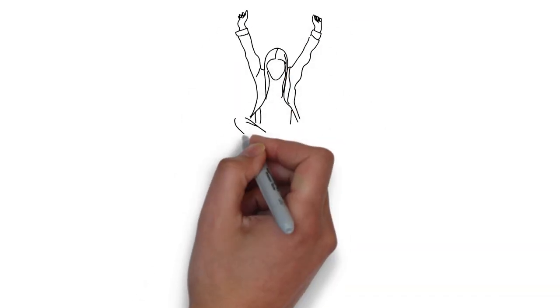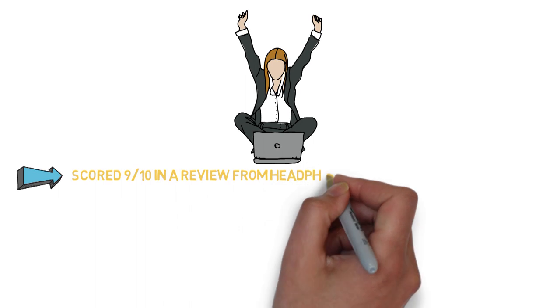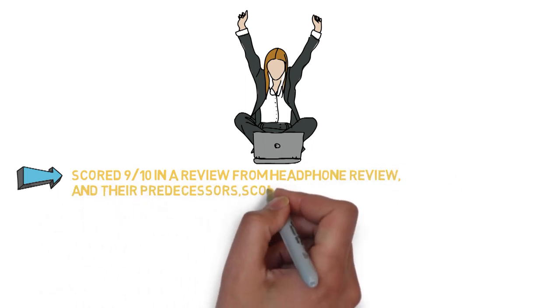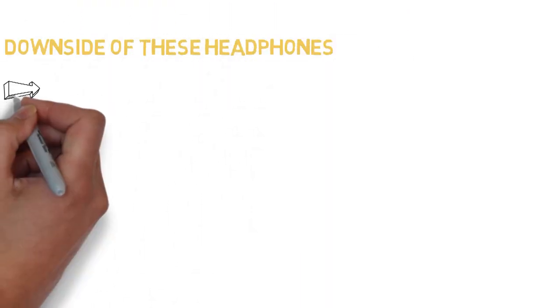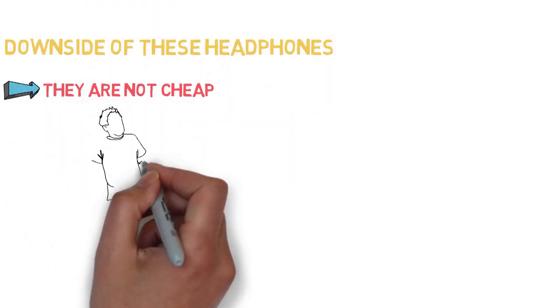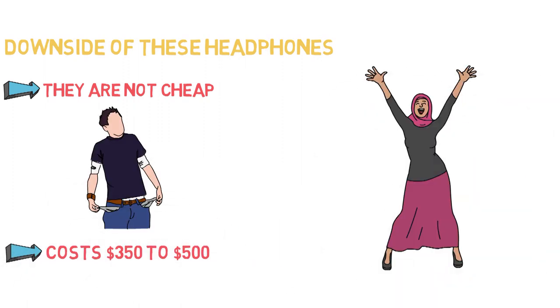We are not the only ones who love the Sennheiser Momentum 2.0 wireless headphones. They scored 9 out of 10 in a review from Headphone Review, and their predecessor scored 9 out of 10 on Trusted Review, and 4 out of 5 on CNET. The main downside to these headphones is that they're not cheap. To get them, you'll need to shell out a cool $350 to $500. But if you do, you won't be sorry.